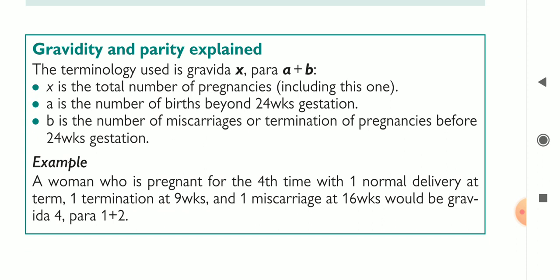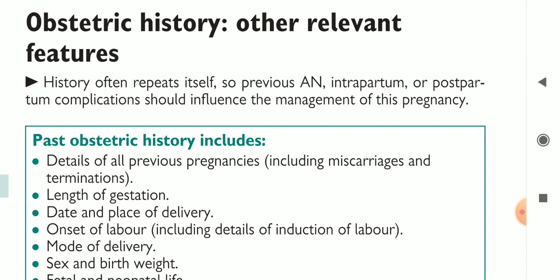Gravidity means the number of pregnancies, and parity refers to births beyond 24 weeks of gestation. If a fetus crosses 24 weeks of gestation, the lady is considered primiparous. If the baby is less than 24 weeks of gestation, that condition is referred to as nulliparous.